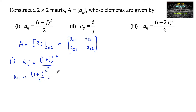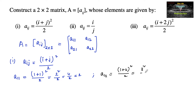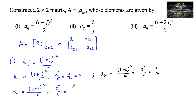a11 equals 2 squared upon 2, which is 4 upon 2, equal to 2. The next element a12 is equal to (1 plus 2) whole square upon 2, that is 3 squared upon 2, which is 9 by 2. a21 is equal to (2 plus 1) whole square upon 2, that is 3 squared upon 2, which is 9 by 2. And a22 is equal to (2 plus 2) whole square upon 2, that is 4 squared upon 2.